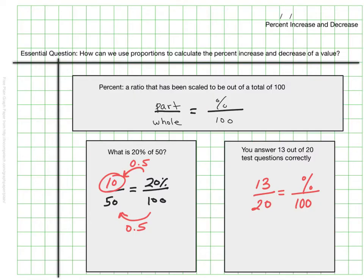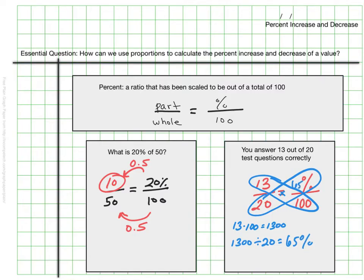You also might remember seeing something like this last year where we did this butterfly and we could kind of loop these together and we can multiply 13 times 100, and then take that answer and divide it by 20, and that will get us our total as well, which in this case would be 65%. So the answer here would be 65% on that test. So that's kind of what we did last year.